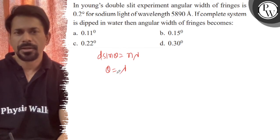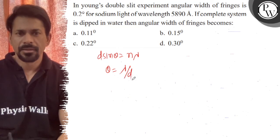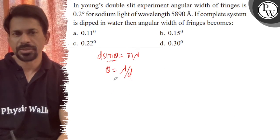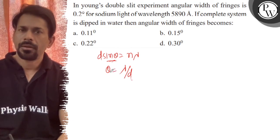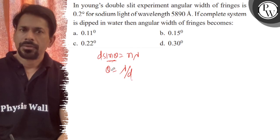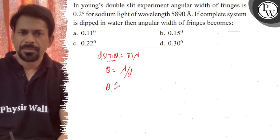And that is directly proportional to what? Lambda by D. If we say sin theta equals small theta, then theta is directly proportional to lambda.